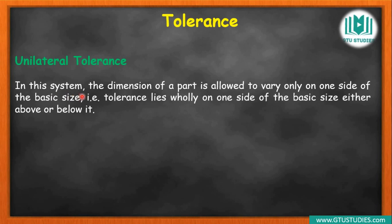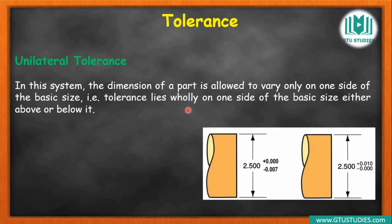Unilateral tolerances: in this system, the dimension of a part is allowed to vary only on one side of the basic size — either the upper limit is given or the lower side limit is given, not both sides. So unilateral tolerances means tolerance lies only on one side of the basic size, either above or below. For example, in the left side figure, the basic size is 2.5. The upper limit allowed is 0 — meaning no component above 2.5 is allowed. But on the lower side, it is allowed down to minus 0.007, meaning 2.5 minus 0.007 equals 2.493.